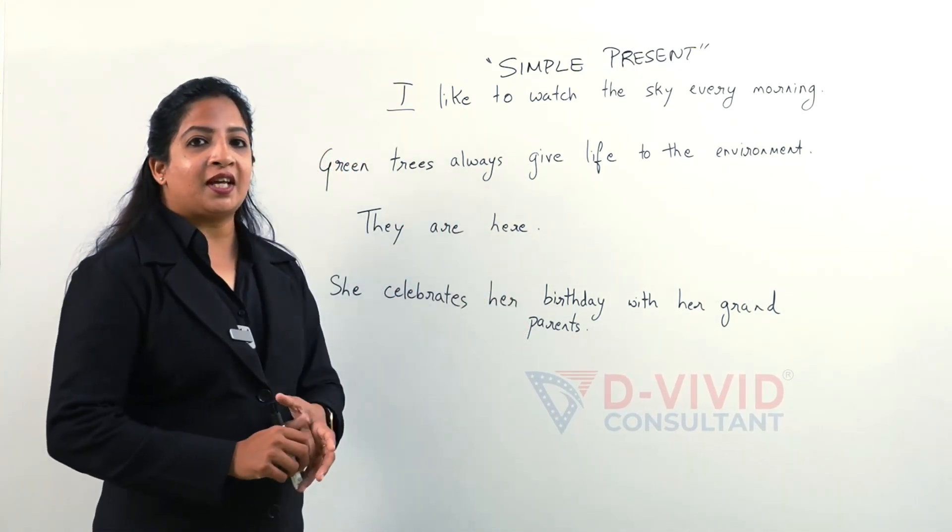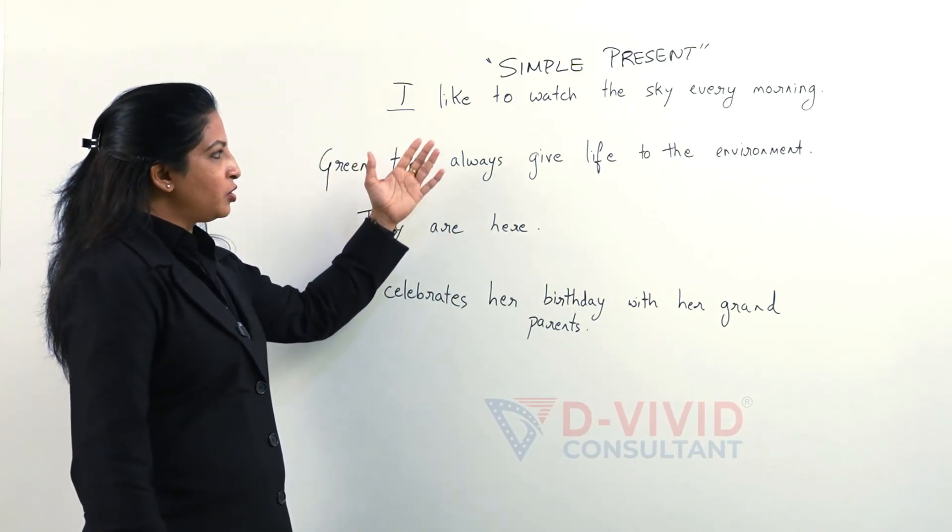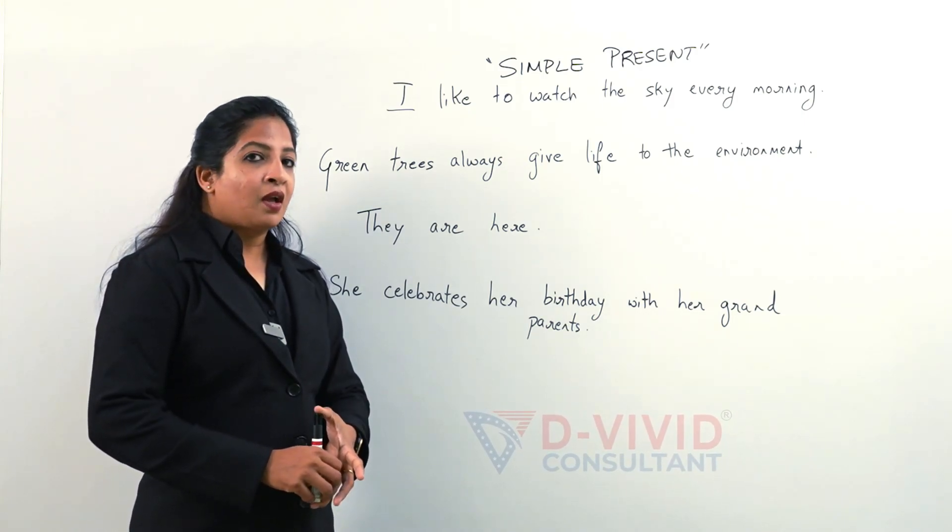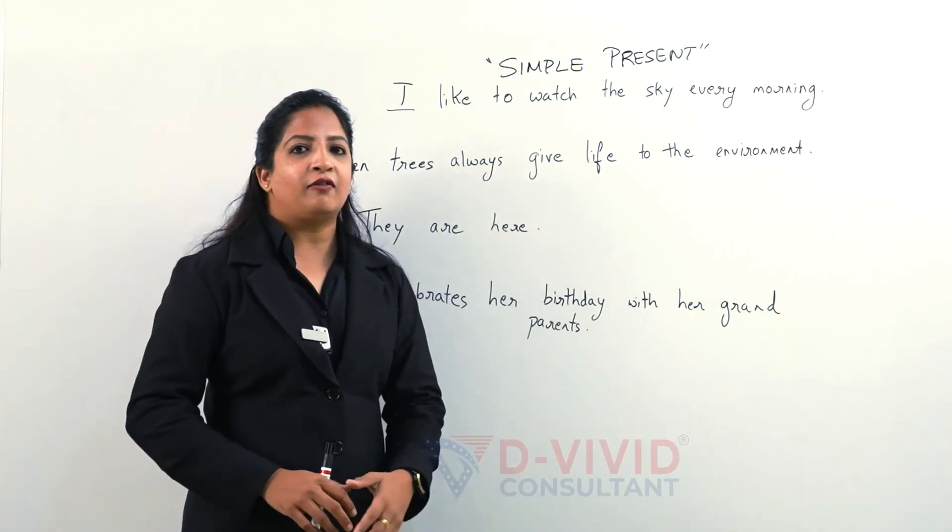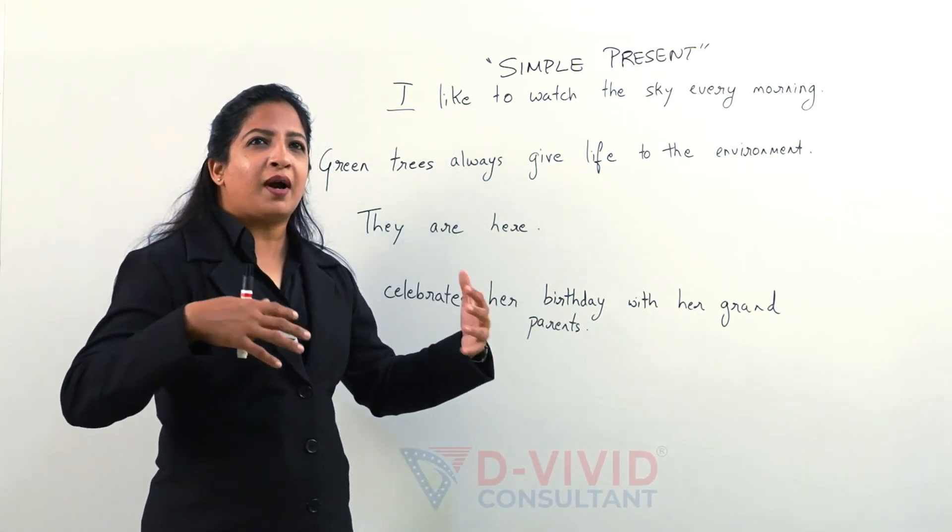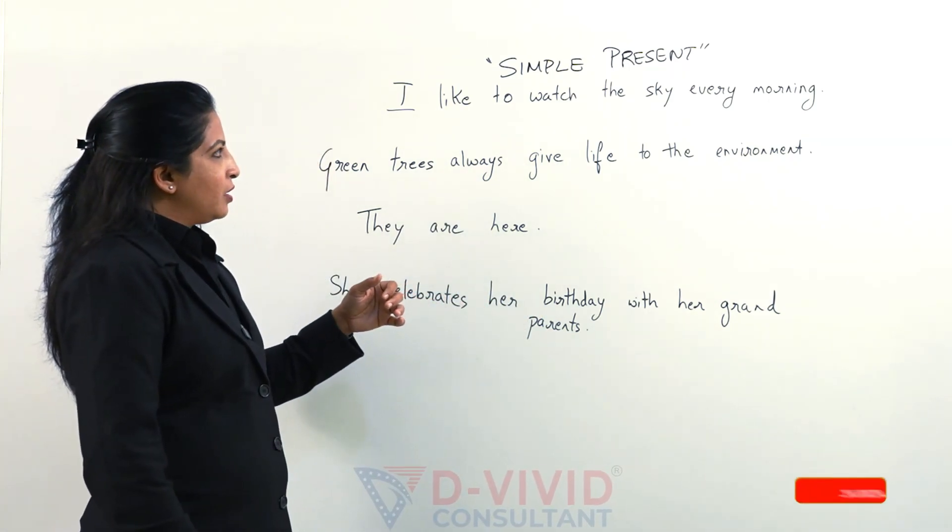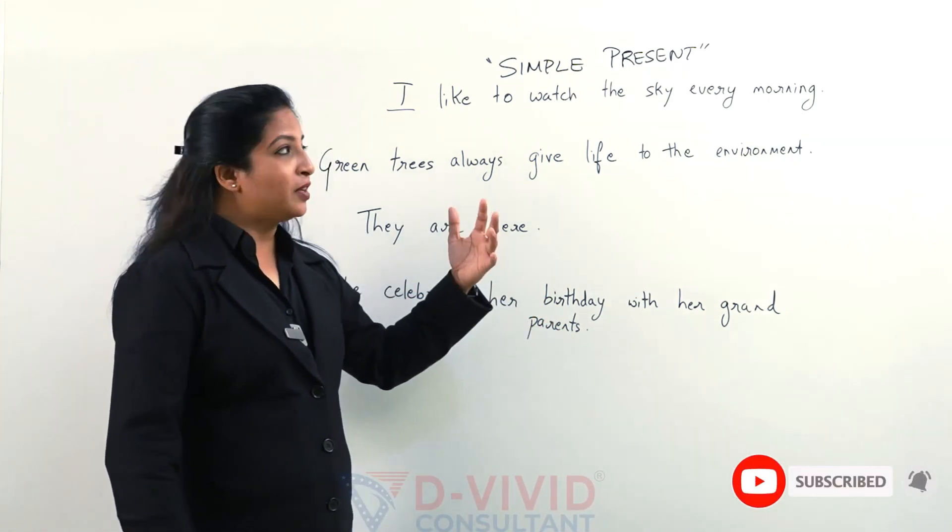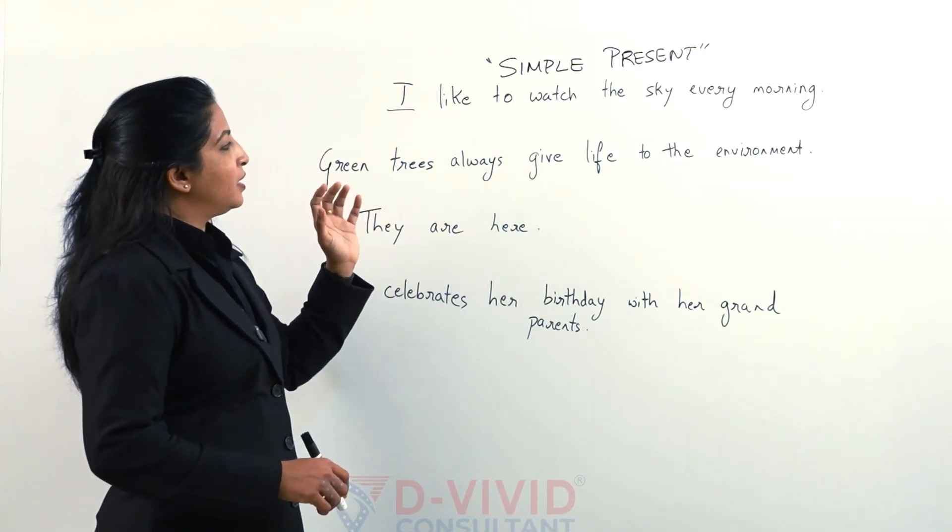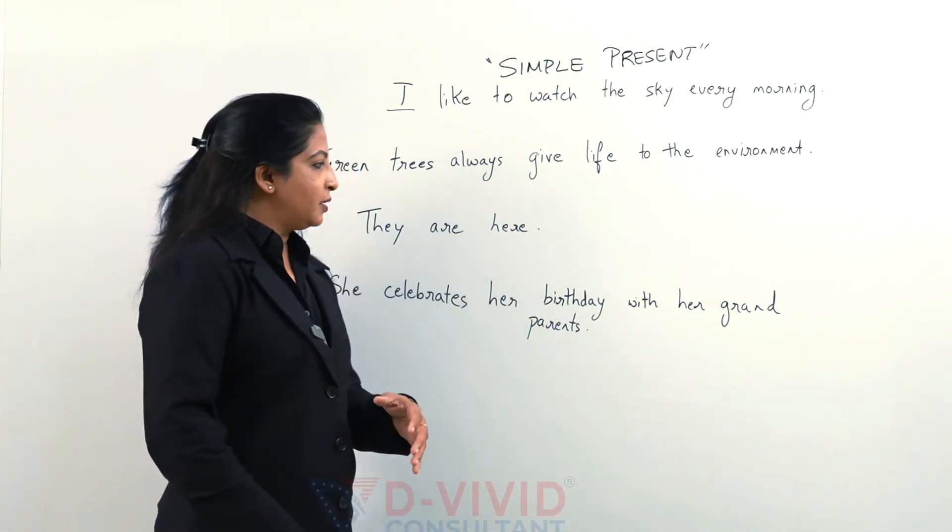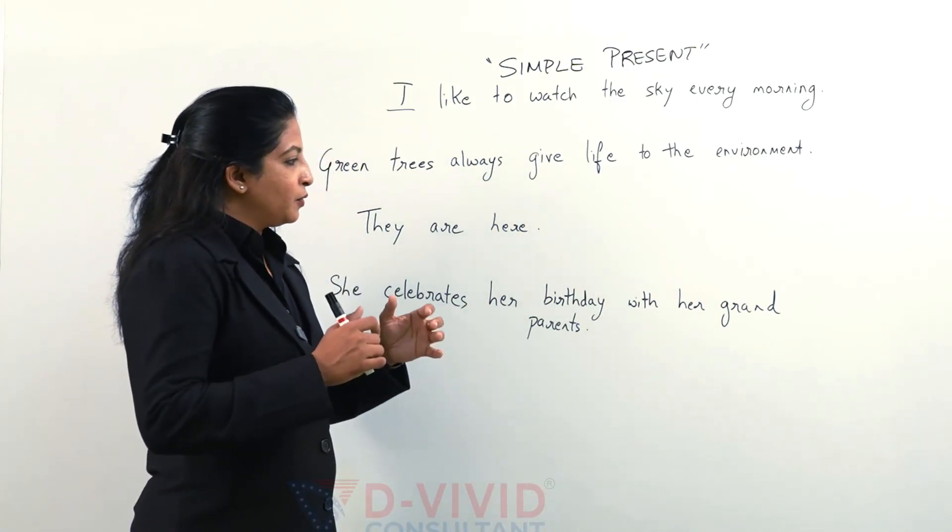Now here I have written few sentences and I would like you guys to judge the situation of all four sentences. How can I say that these four sentences fall under the category of present simple? I like to watch the sky every morning. Green trees always give life to the environment. They are here. And she celebrates her birthday with her grandparents.